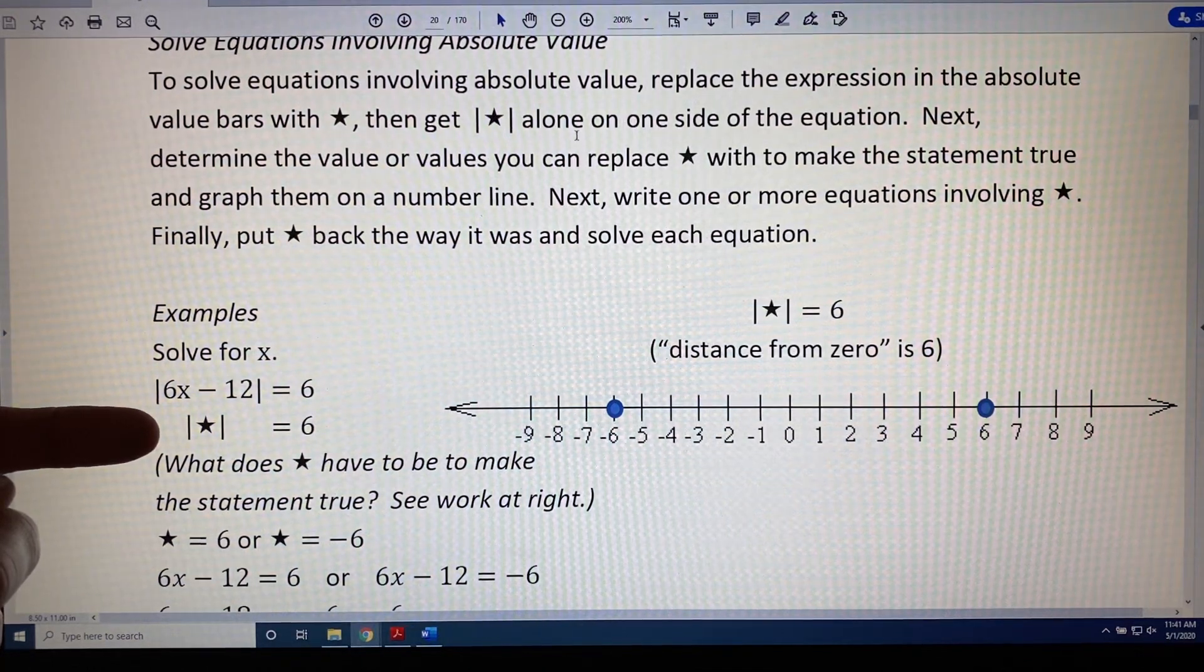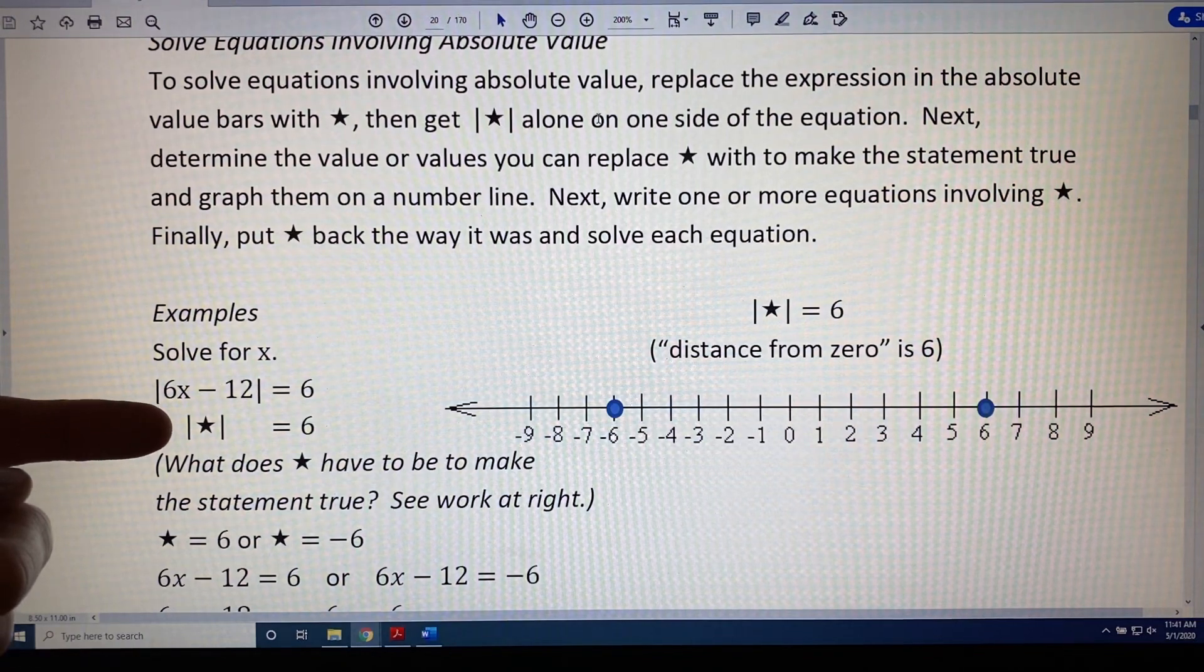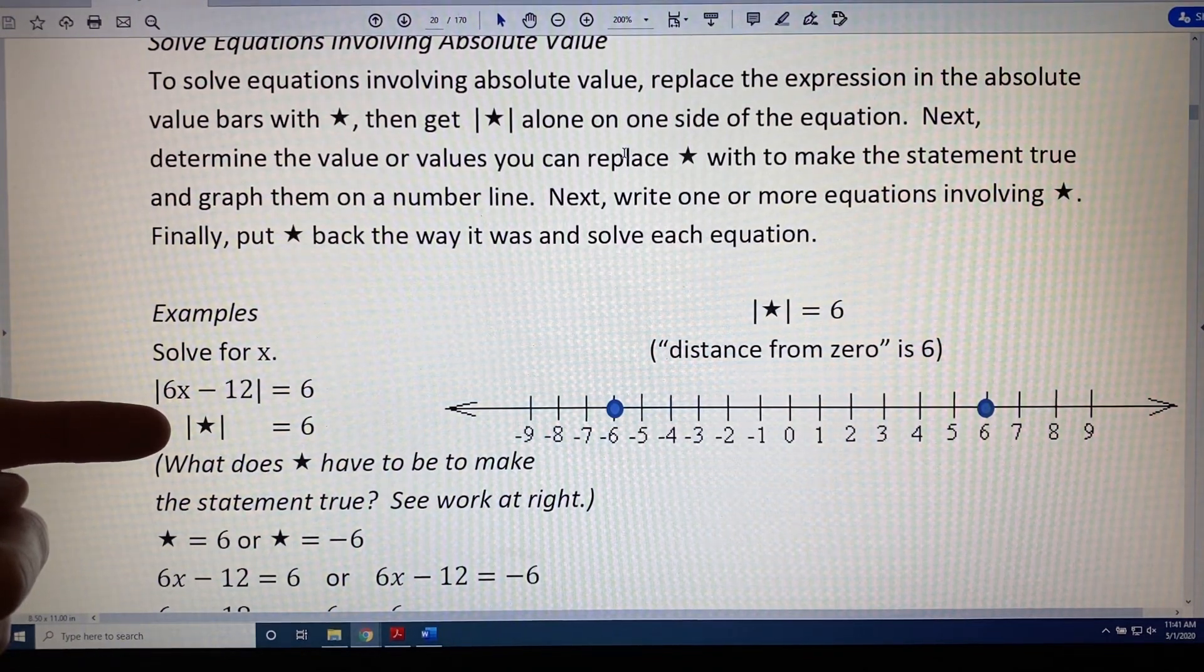The next step is to get the absolute value of star alone on one side of the equation. Well, it's already alone, so there's nothing we have to do to achieve that.